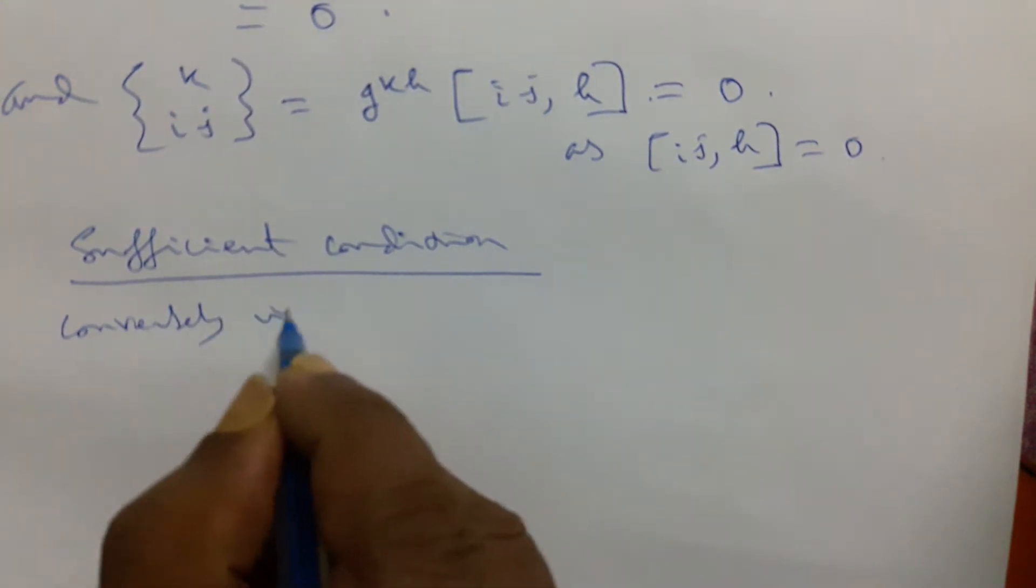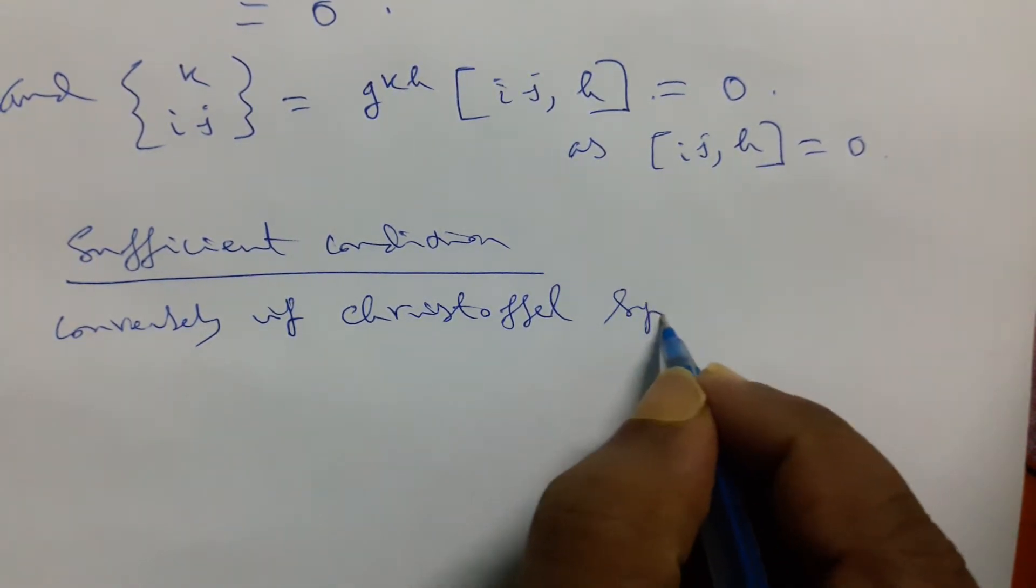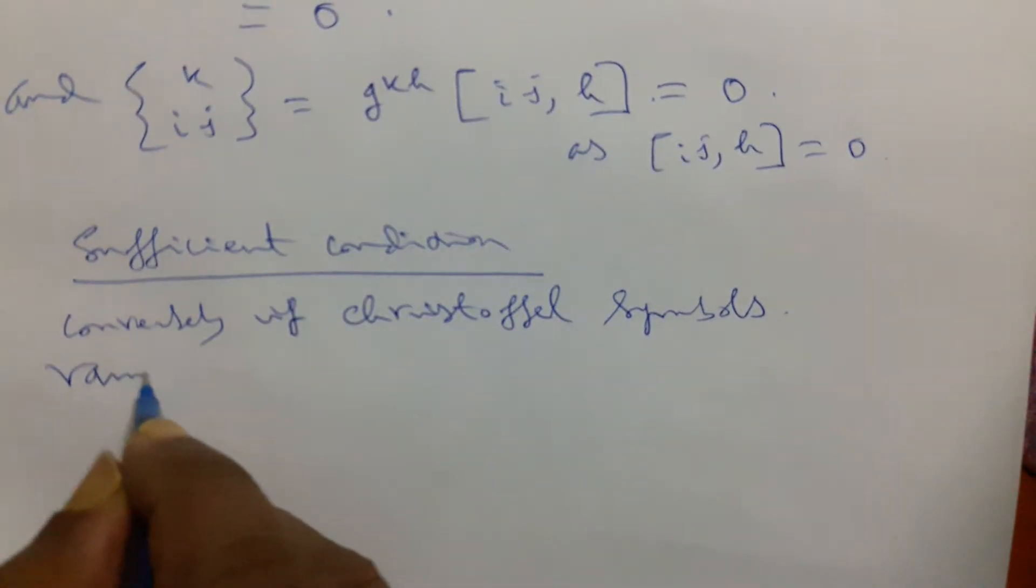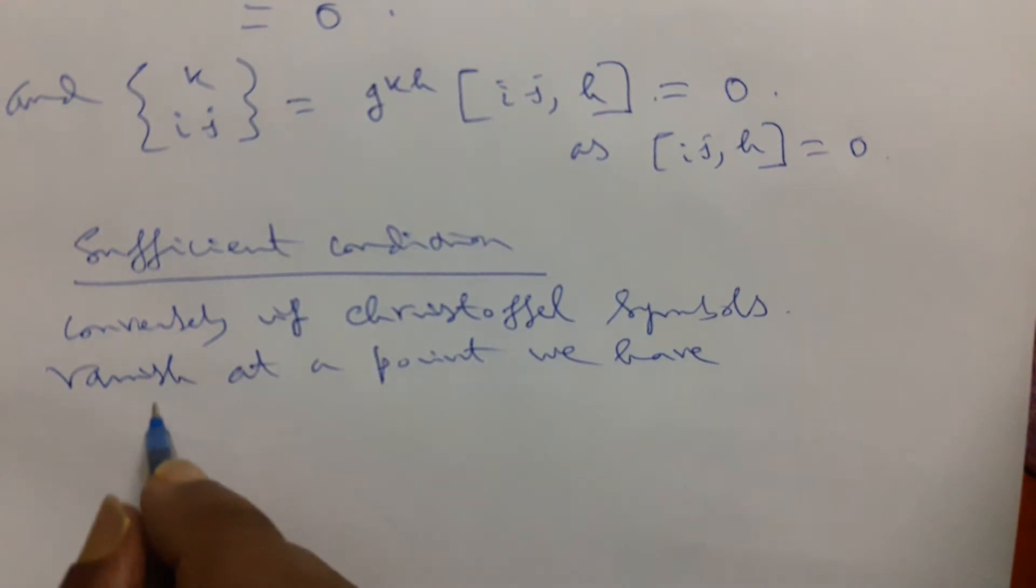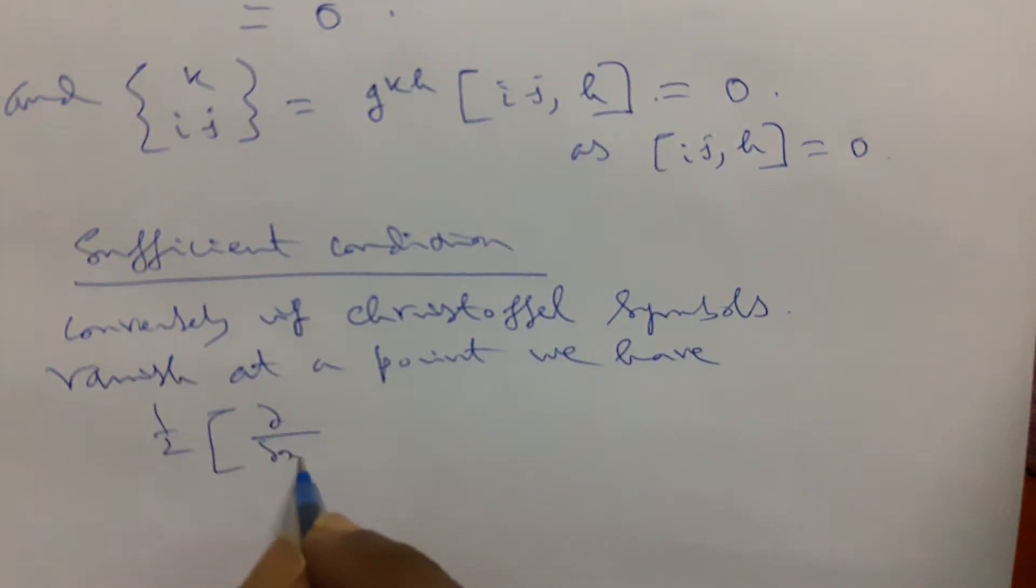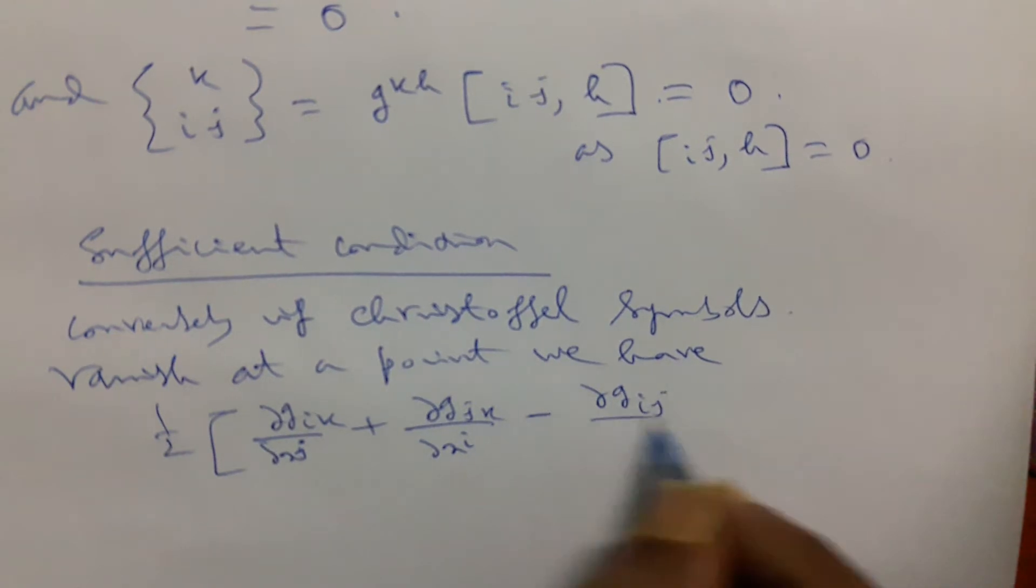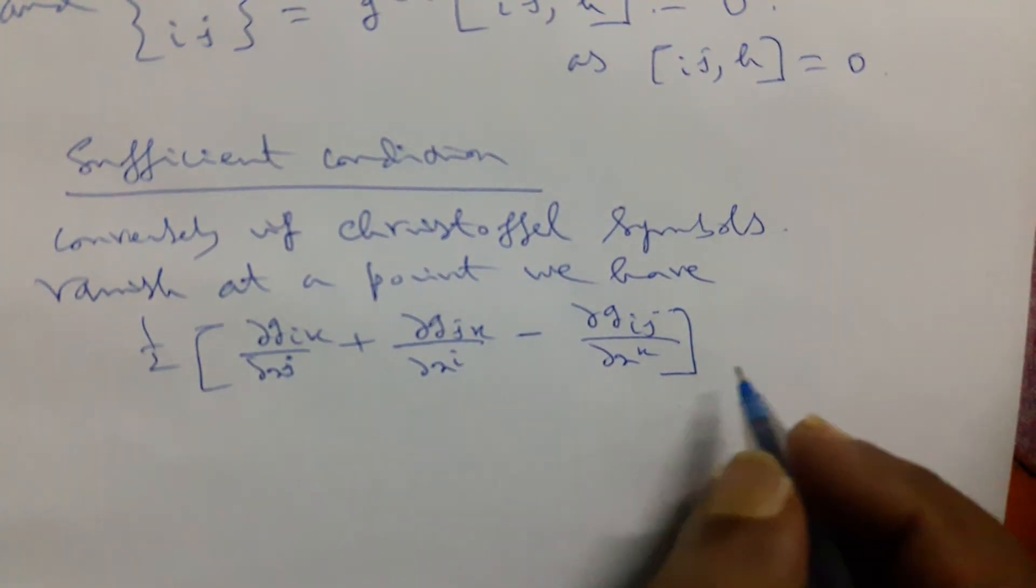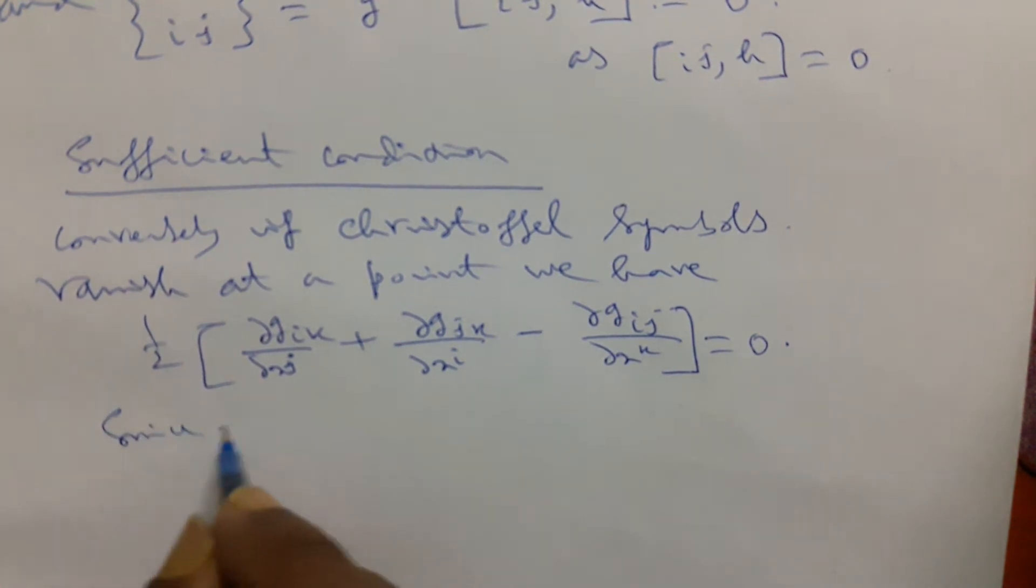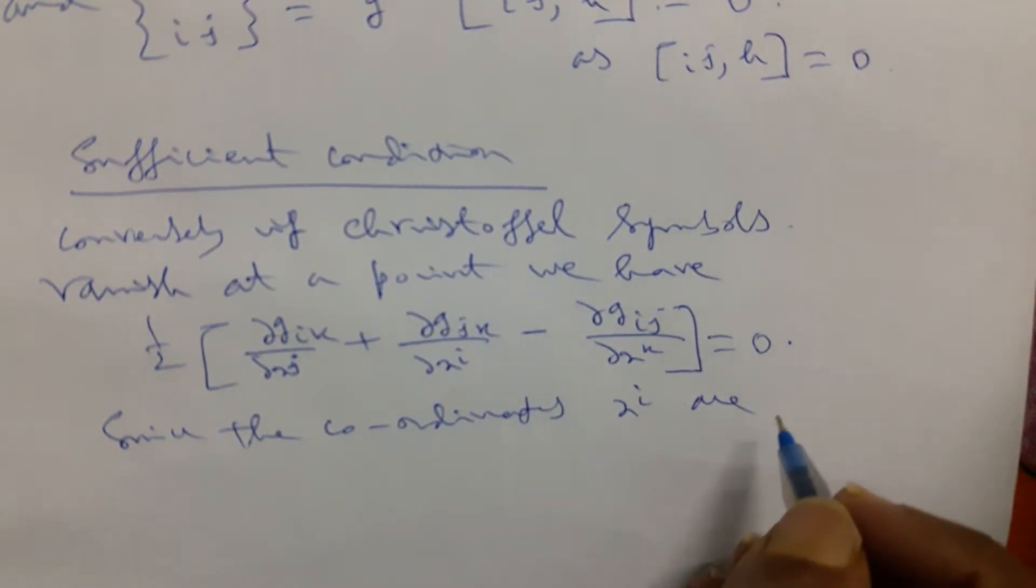Conversely, if Christoffel symbols vanish at a point, we have half of del/del xj of Gik plus del/del xi of Gjk minus del/del xk of Gij. If it will be 0, since the coordinates xi are independent...